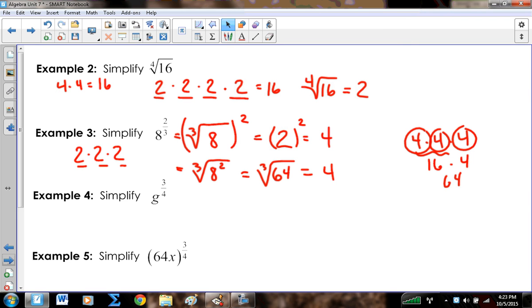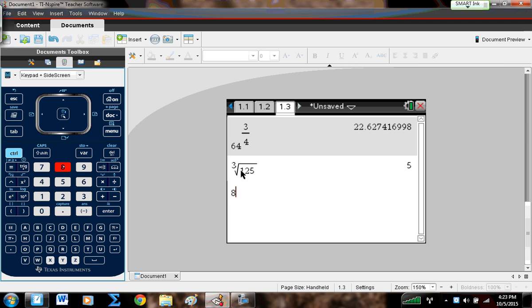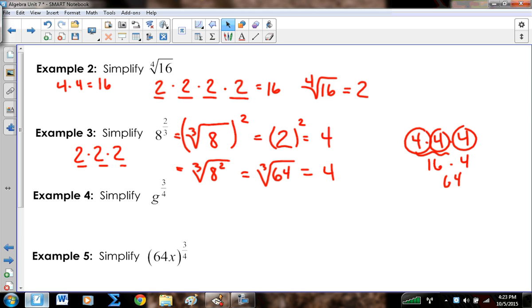I can also just do that right away on my calculator. 8 with an exponent to get a fraction, you do control, division, put in 2 in the numerator and 3 in the denominator, and you get 4. All right? But you do have to be able to switch back and forth, especially for something like number 4. We're not going to be able to put that in the calculator because they don't give us a number for our base. They give us a variable, g. So I'm going to write this as the fourth root of g to the third. If you want, you can write it as the fourth root of g to the third. I don't care which way. They're both the same thing, but that's the idea.